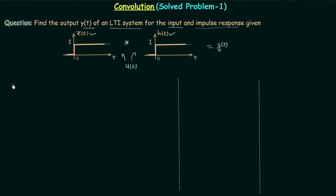In the first method we will perform the convolution in a conventional way. In the second method we will use the Laplace transform, and in the third method we will use the properties of convolution. Let's begin the solution by first seeing how to obtain the output using the conventional approach.